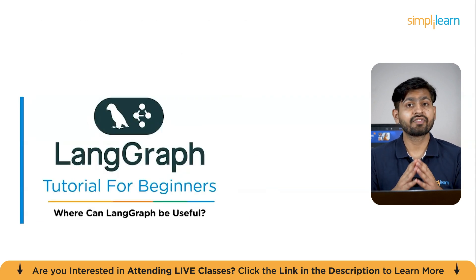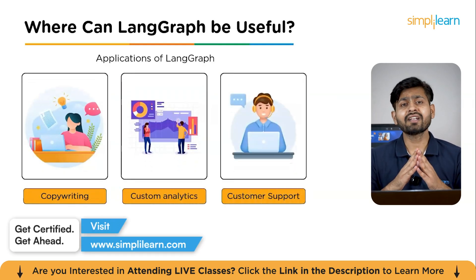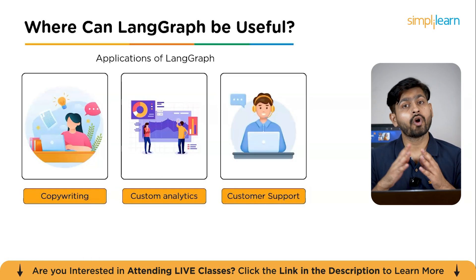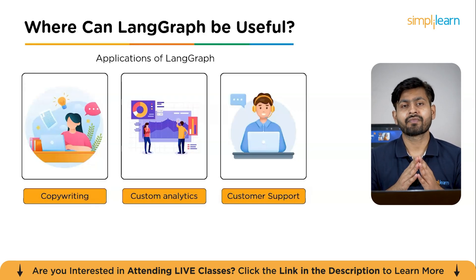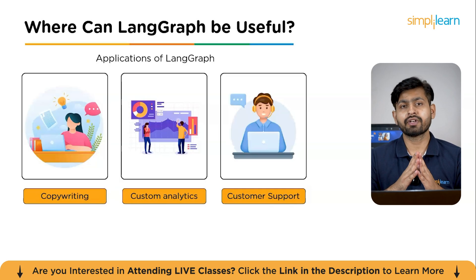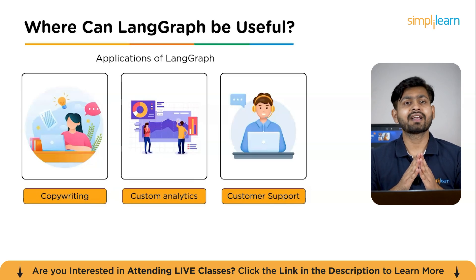Let's explore where LangGraph can be useful. The first is copywriting — generating content by pulling data from multiple sources. LangGraph can combine research from web articles, product specs, and previous campaigns to create high-quality blog posts, ads, or email content automatically. Another use case is custom analytics, like creating dashboard summaries or extracting insights from a database. You can build agents that query databases, clean and process data, then generate natural language summaries or visual reports without manual intervention. Finally, in customer assistance, you can answer queries via email, WhatsApp, SMS, or even voice. LangGraph can handle multi-channel conversations, maintain context across threads, and escalate issues to a human if needed — all within a seamless flow.